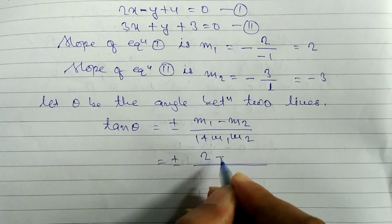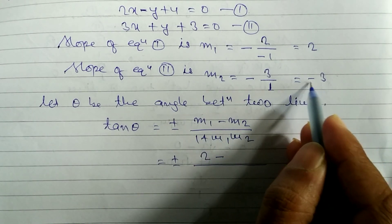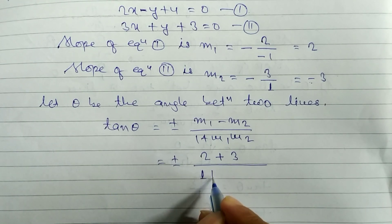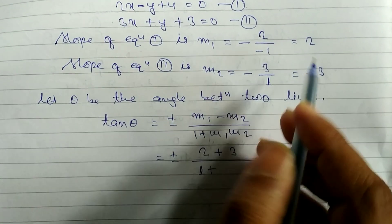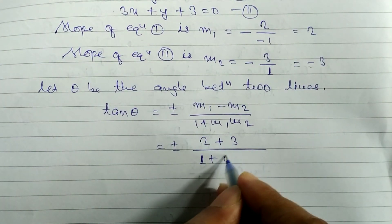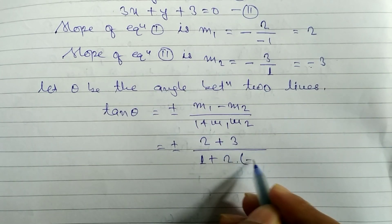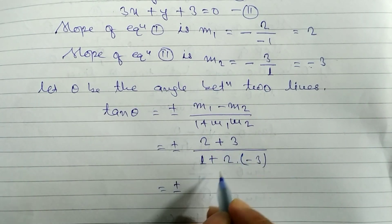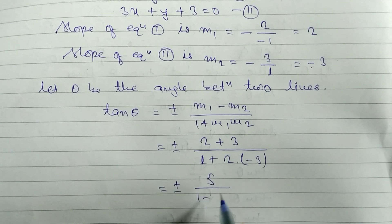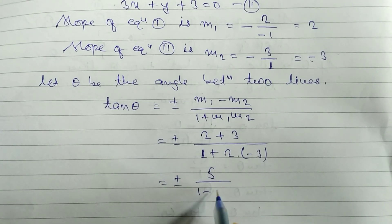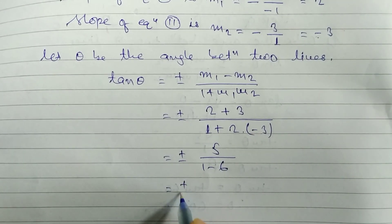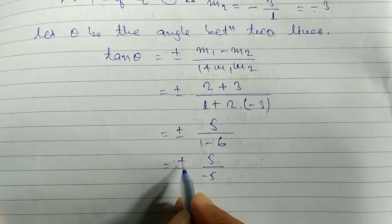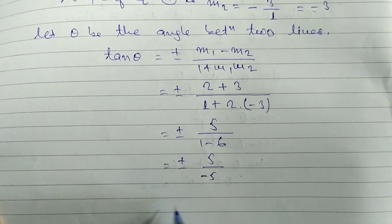Substituting values: m1 is 2 and m2 is minus 3. So the numerator is 2 minus (minus 3), which gives 2 plus 3 equals 5. The denominator is 1 plus (2 times minus 3), which is 1 plus (minus 6) equals 1 minus 6 equals minus 5. So tan theta equals plus or minus 5 divided by minus 5.